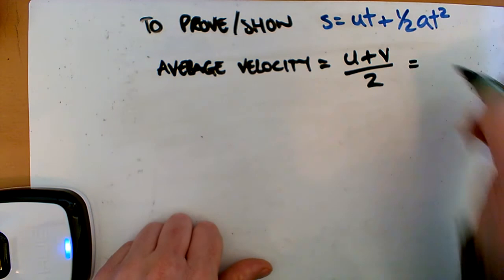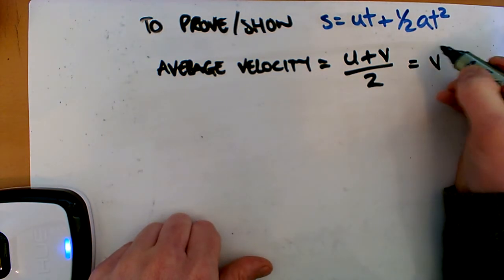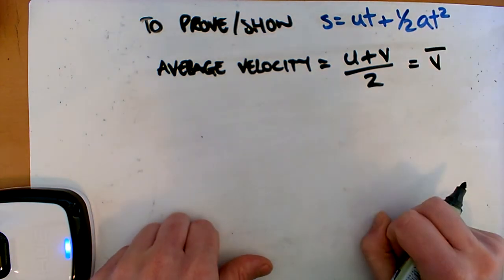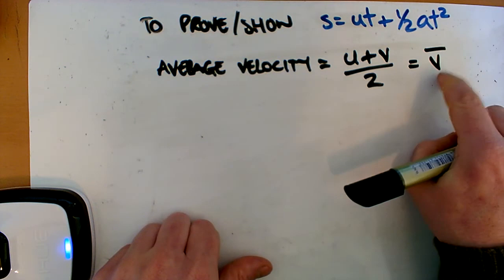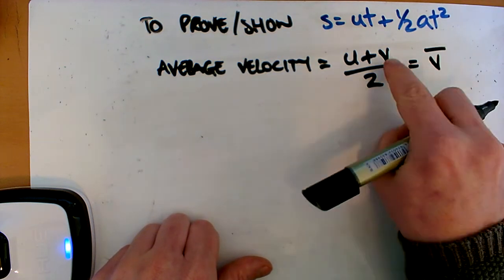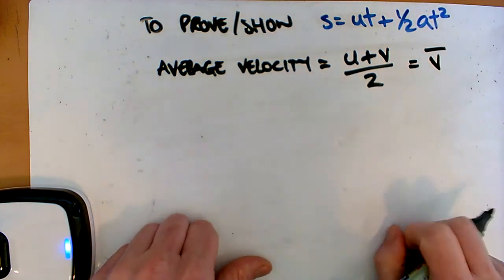We don't really use the symbol in the course so far, but I'm going to put this here as V bar. So you might have seen that in your maths course. So this is just the average velocity. So we can distinguish it with final velocity. These aren't the same thing. This is your average.